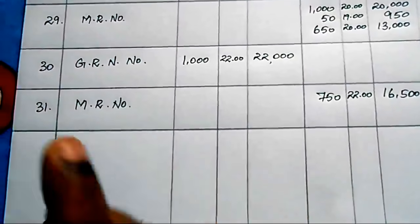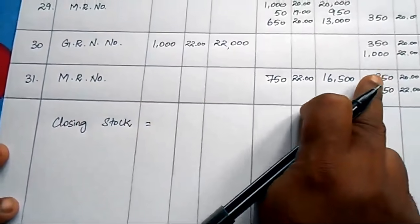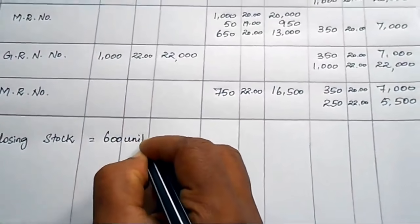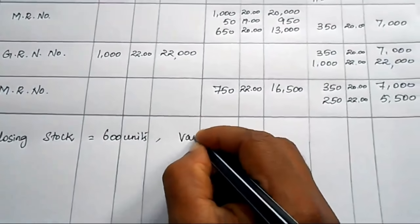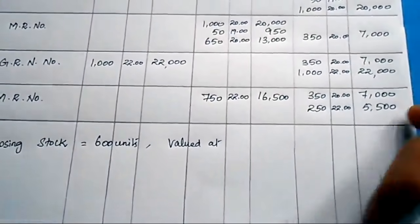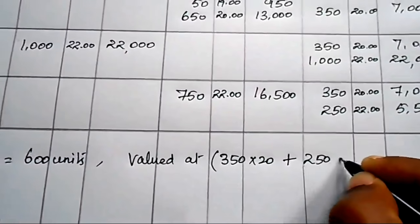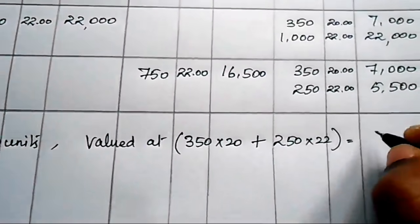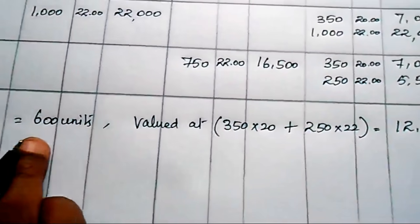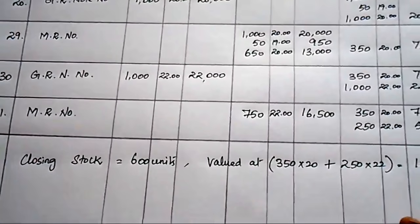Now write the closing stock. Total units: 350 + 250 = 600 units. Valued at: 350 × ₹20 = ₹7,000 plus 250 × ₹22 = ₹5,500. Total closing stock value according to LIFO = ₹12,500.